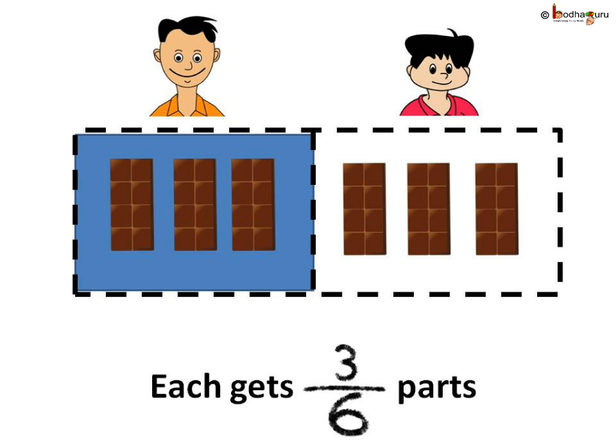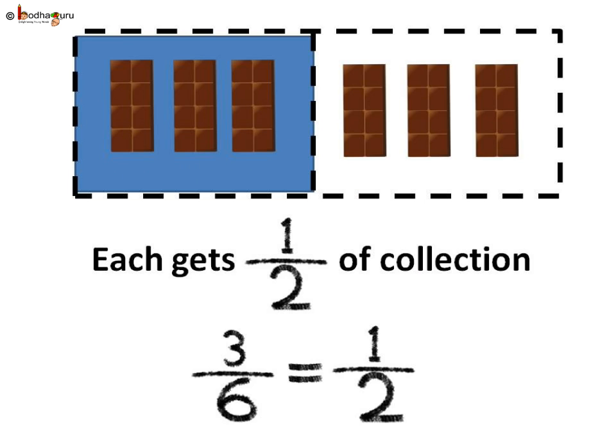There are six chocolates. Two friends divide them equally. So each gets three chocolates. It means three by six — three out of six chocolates — come in each part.